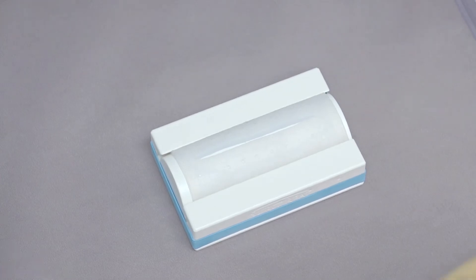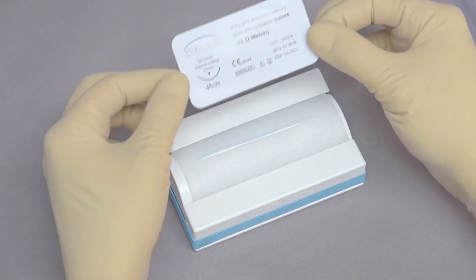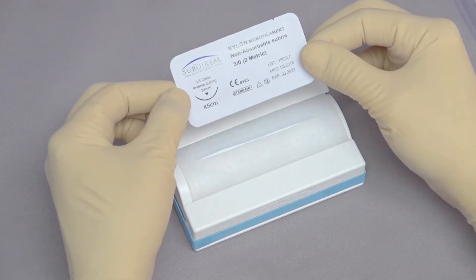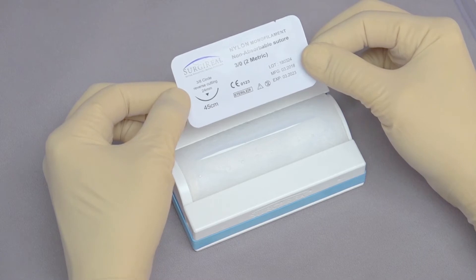We're going to place this now in the perpendicular fashion to our body. To suture today, we're going to use three-zero monofilament nylon suture with a reverse cutting needle.